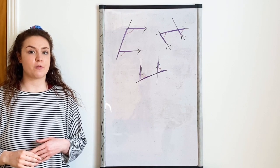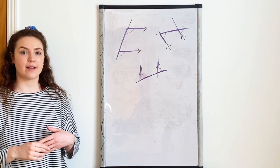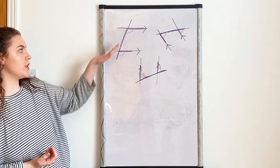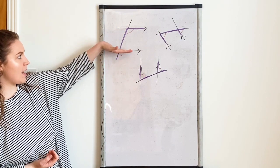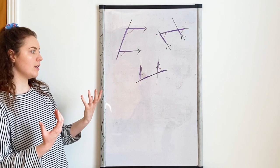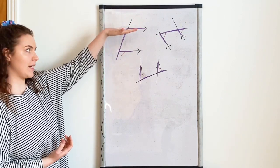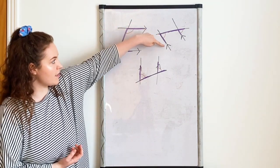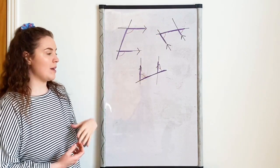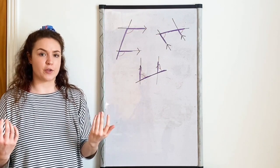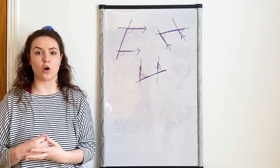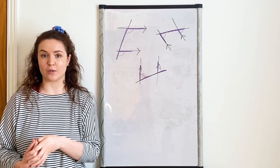A way some people like to remember corresponding angles is by thinking of an F shape. If you look at this example, you can see that the angles when you draw them in create an F. It might not always look as much like an F — sometimes it's rotated, and it might be flipped as well. But if that helps you remember it, you can always try to picture an F, and those will be corresponding angles.